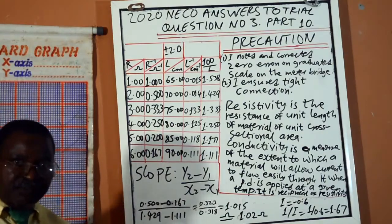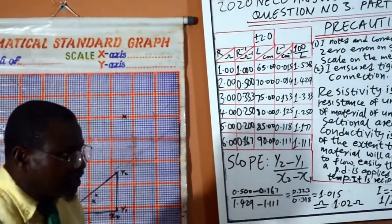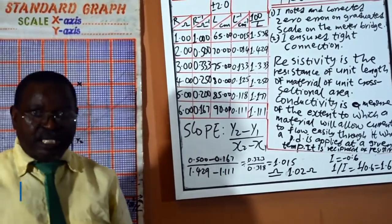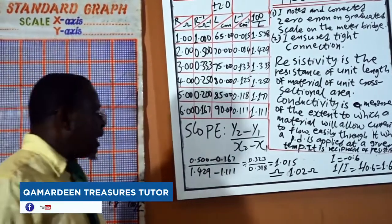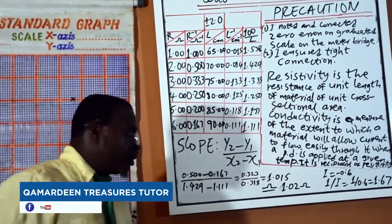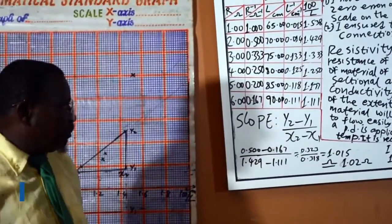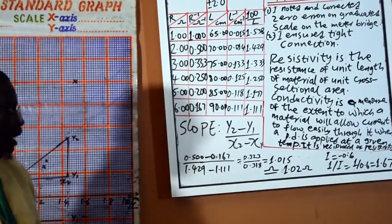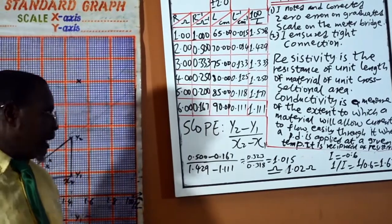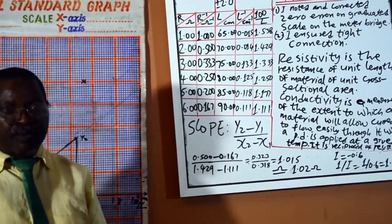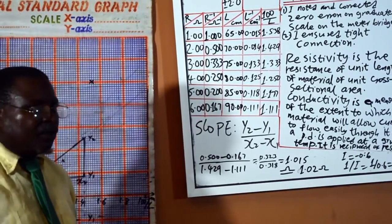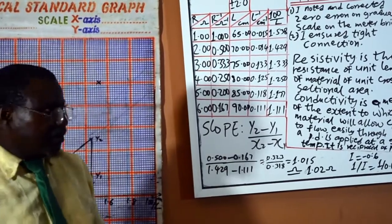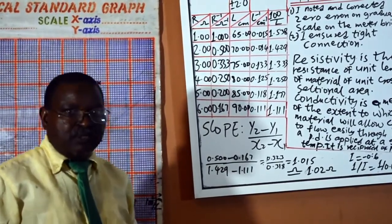Definition of resistivity: Resistivity is the resistance of unit length of material of unit cross-sectional area. While conductivity is a measure of the extent to which a material will allow current to flow easily through it, while the potential difference is applied at a given temperature. We also define conductivity as the reciprocal of resistivity, that is the opposite of resistivity.